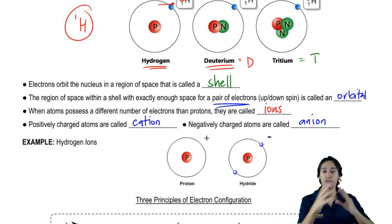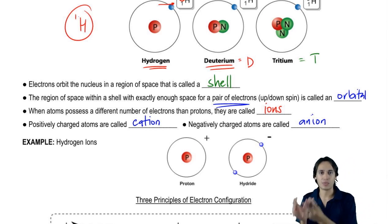Basically, different amounts of neutrons actually affects the weight, so you get a different atomic mass. Different amounts of electrons doesn't affect the weight that much, but it does affect the charge. Why?